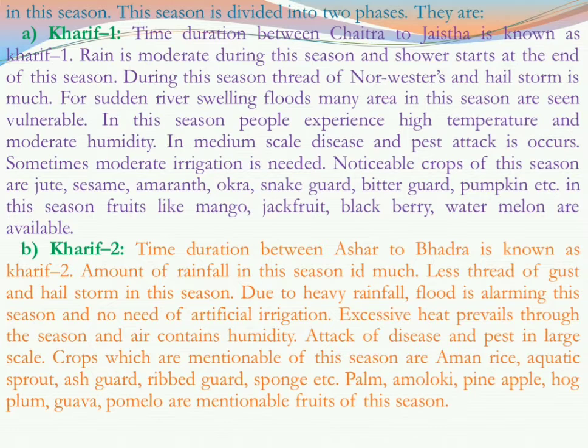In Kharif 2, flood is certain and alarming for people. As there is heavy rainfall, there is no need for irrigation. Excessive heat prevails through the season and air contains high humidity. Disease and pest attack is much greater than in Kharif 1. Notable crops of this season are Amon rice, aquatic sprout, ash gourd, ridge gourd, and sponge gourd.